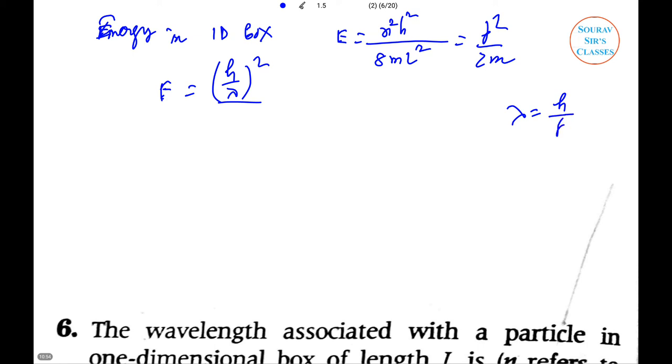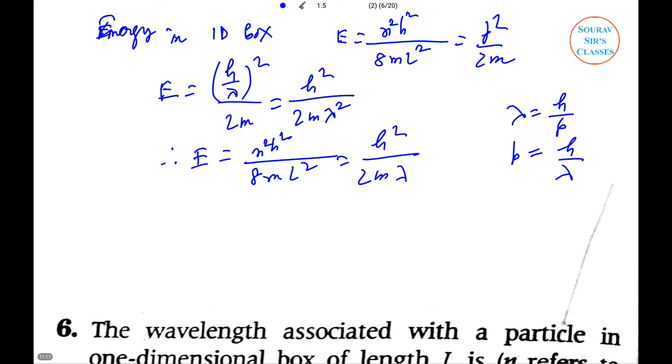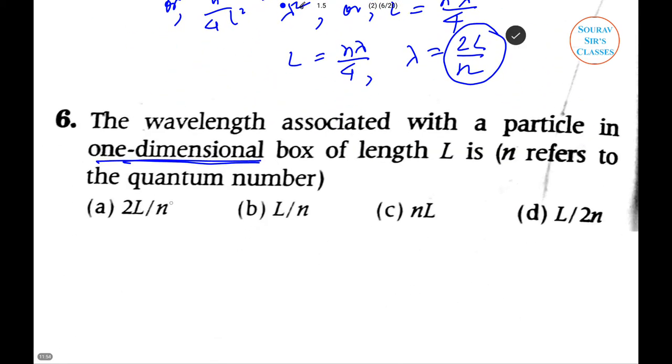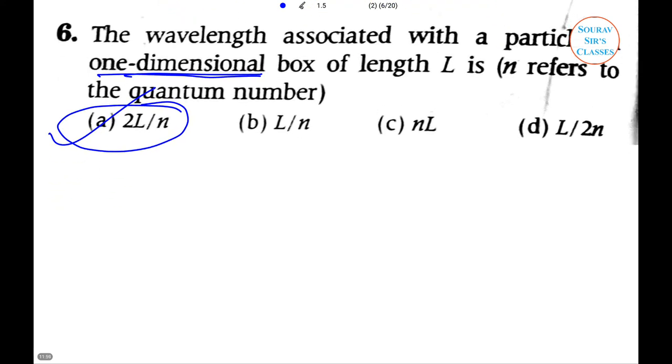We know λ equals h/p, so p equals h/λ. Replacing, we get h²/(2mλ²). Therefore n²h²/(8mL²) equals h²/(2mλ²). This gives n²/(4L²) equals 1/λ², or L² equals n²λ²/4. So L equals nλ/2, and λ equals 2L/n. Hence the wavelength associated with a particle in a one-dimensional box is 2L/n. The answer is option A.